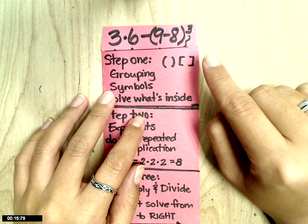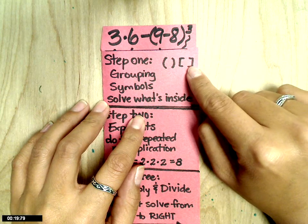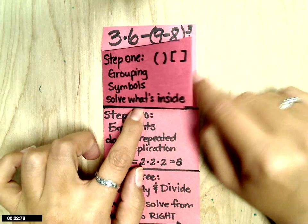Step 1, my first flap, is grouping symbols or parentheses, sometimes brackets. That just means you solve what's inside.